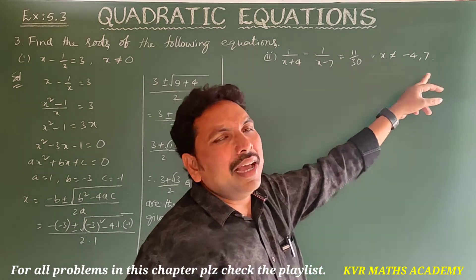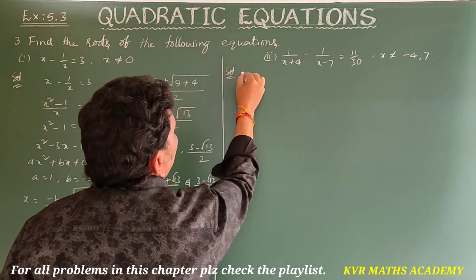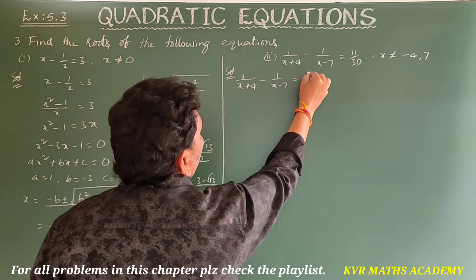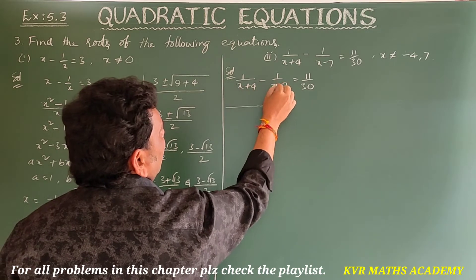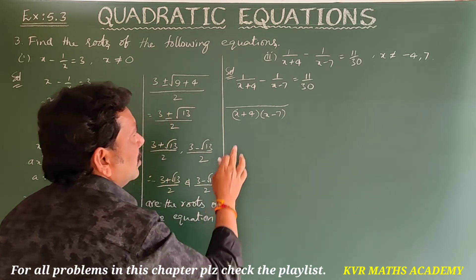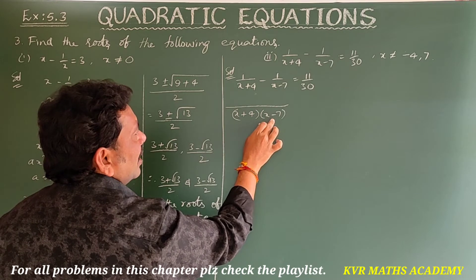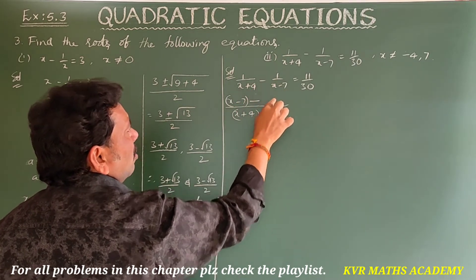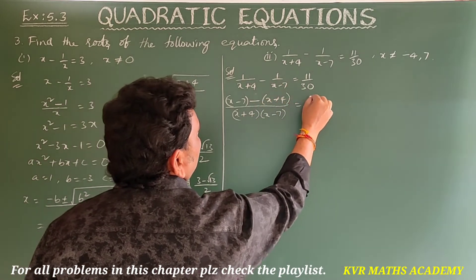Taking the LCM of the denominators: LCM is (x+4)(x-7). Multiplying through: (x-7) minus (x+4) over (x+4)(x-7) equals 11/30.